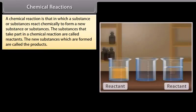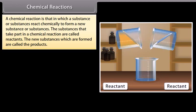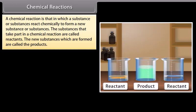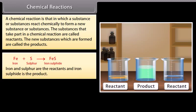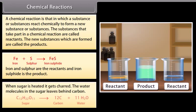Chemical reactions. A chemical reaction is one in which a substance or substances react chemically to form a new substance or substances. The substances that take part in a chemical reaction are called reactants. The new substances which are formed are called the products. For example, iron plus sulfur gives iron sulfide — iron and sulfur are the reactants and iron sulfide is the product.